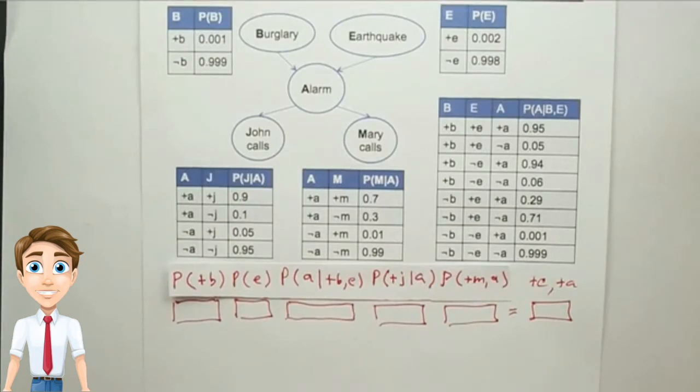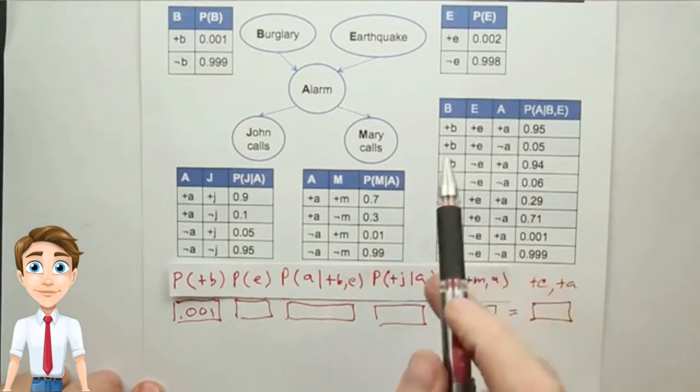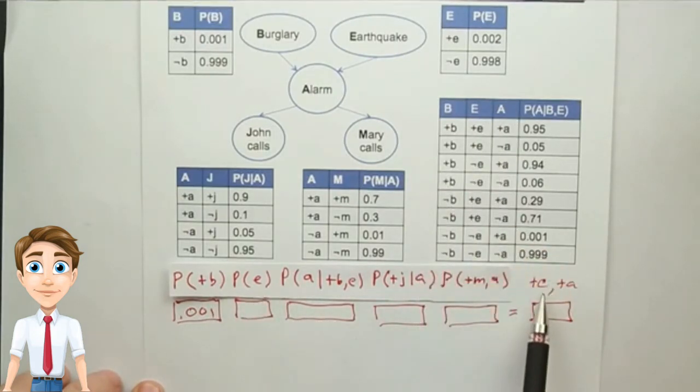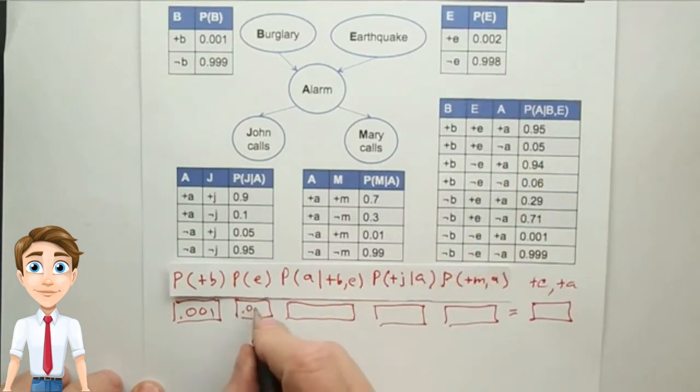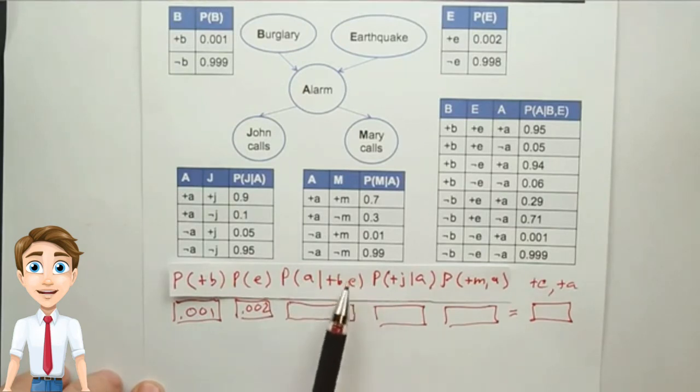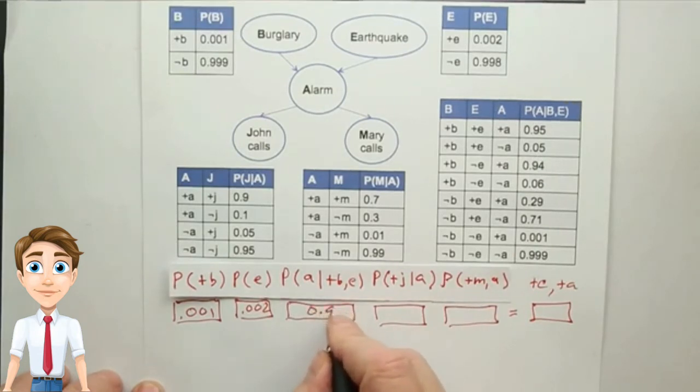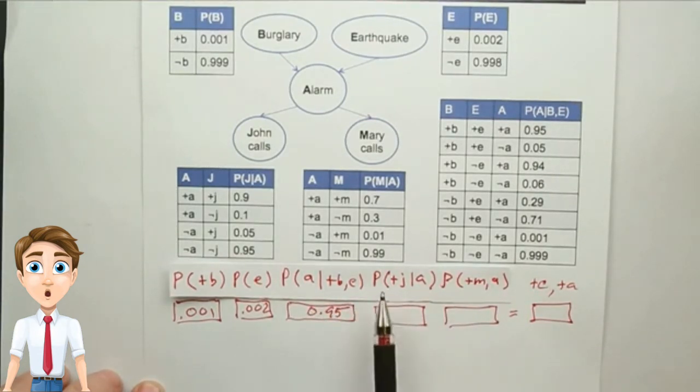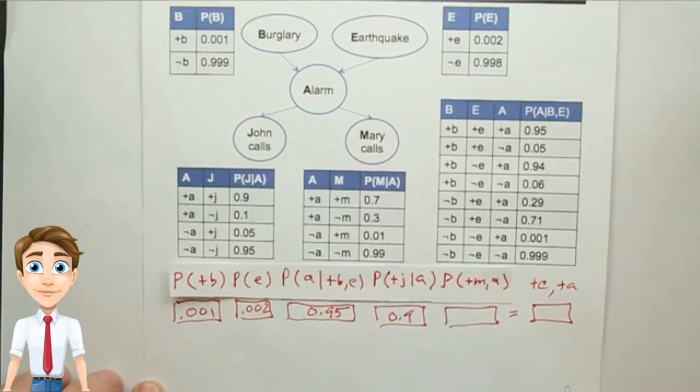We get the answer by reading numbers off the conditional probability tables. So the probability of B being positive, 0.001, of E being positive, because we're dealing with the positive case now for the variable E, is 0.002. The probability of A being positive, because we're dealing with that case, given that B is positive and the case when E is positive, that we can read off here as 0.95. The probability that J is positive given that A is positive is 0.9. And finally, the probability that M is positive given that A is positive we read off here as 0.7.